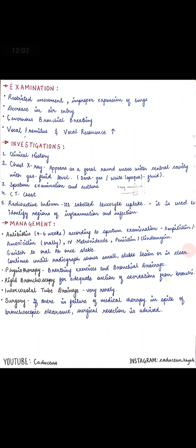For management, first we give antibiotics based on the cultured and detected microbes. Antibiotics are given for a prolonged period of 4 to 6 weeks, until the lung abscess lesion becomes small, stable, and completely clear. Antibiotics used include ampicillin, amoxicillin, metronidazole intravenously, and penicillin. Today, clindamycin is more commonly used. Once the condition is stable, we can switch to oral antibiotics.